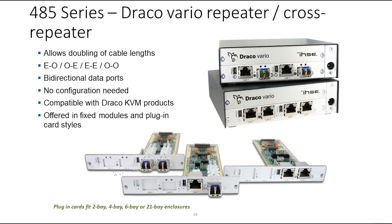The 485 series is our repeater and cross-repeater solution. These are used to be cost-effective within existing infrastructure. If the risers are fiber and then go to cat-x on the floors, we simply go from fiber to cat-x on the cross-repeater, or vice versa. If you simply need to extend a cat-x cable, we can double the distance by inserting a repeater.